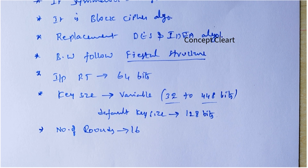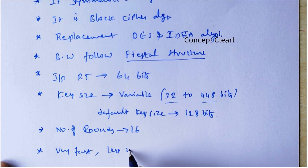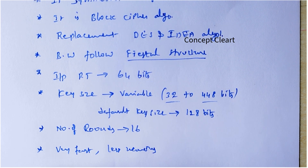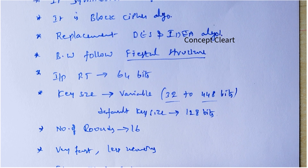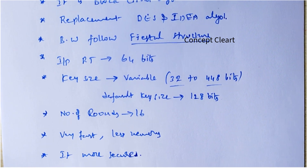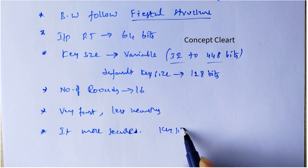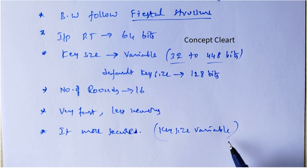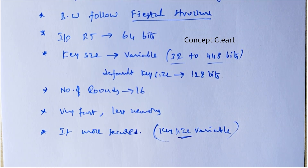The advantages of Blowfish are that it is very fast, takes less memory, and it is more secure. Why? Because if the attacker knows you used the Blowfish algorithm, even then he cannot access or decode your messages, because he cannot know the key size — the key size is variable, from 32 to 448 bits. So he cannot guess the exact size of the key.